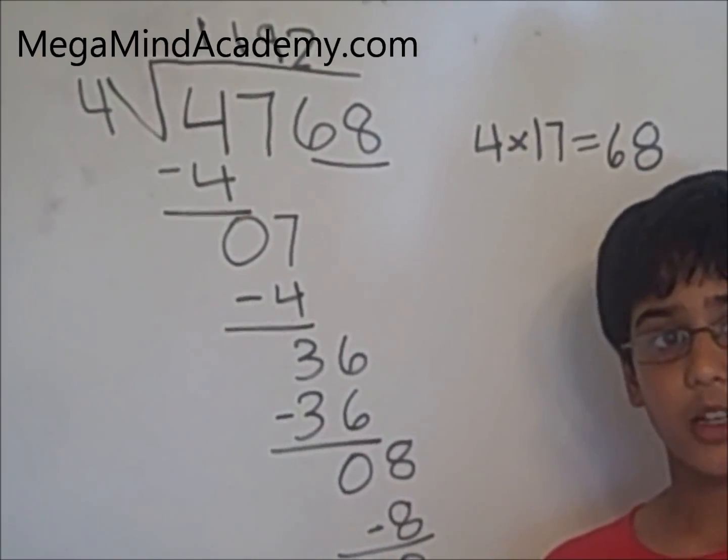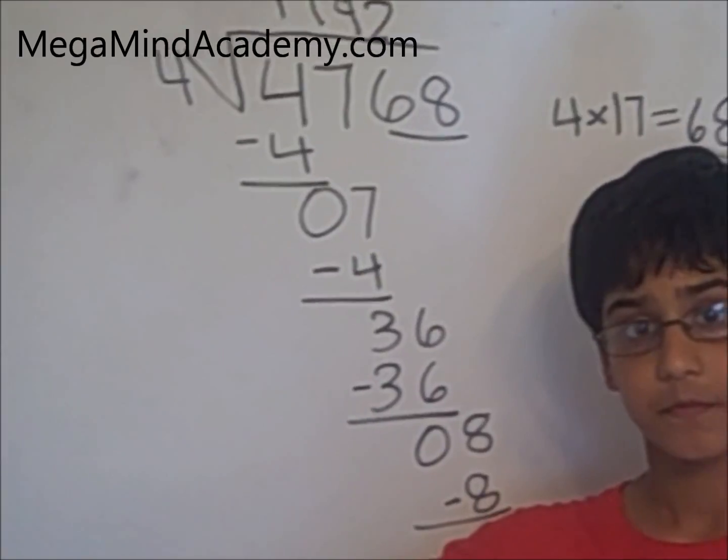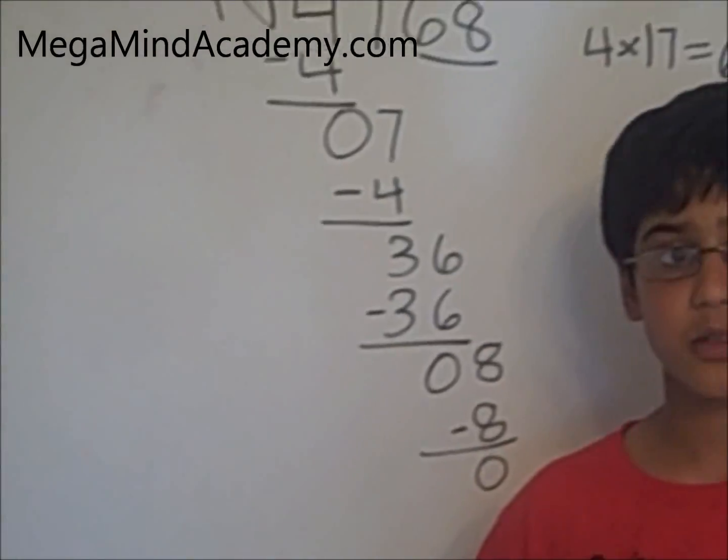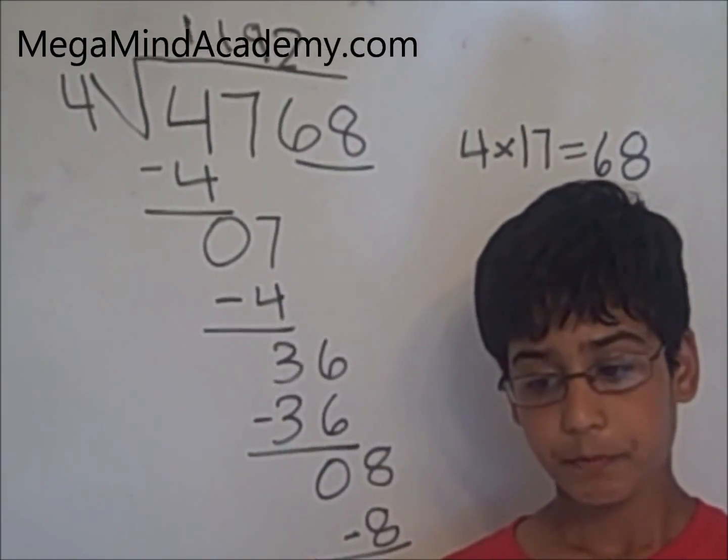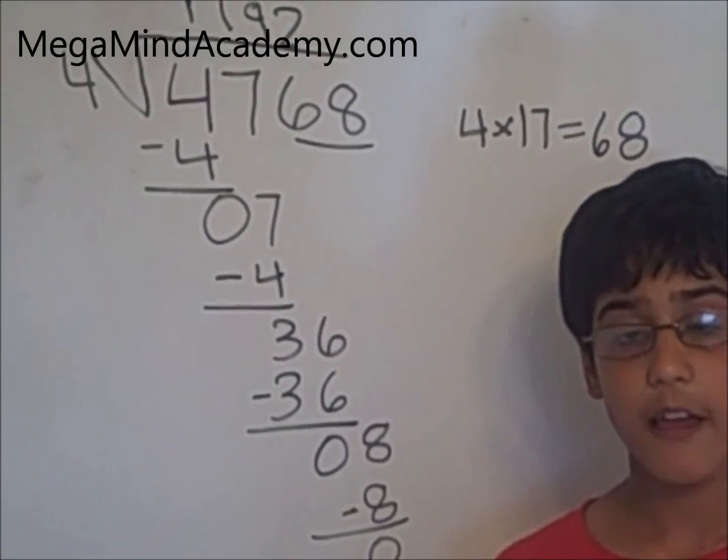Today we learned about divisibility rules. The rule of four. In order for a number to be divisible by four, the last two digits have to be divisible by four.